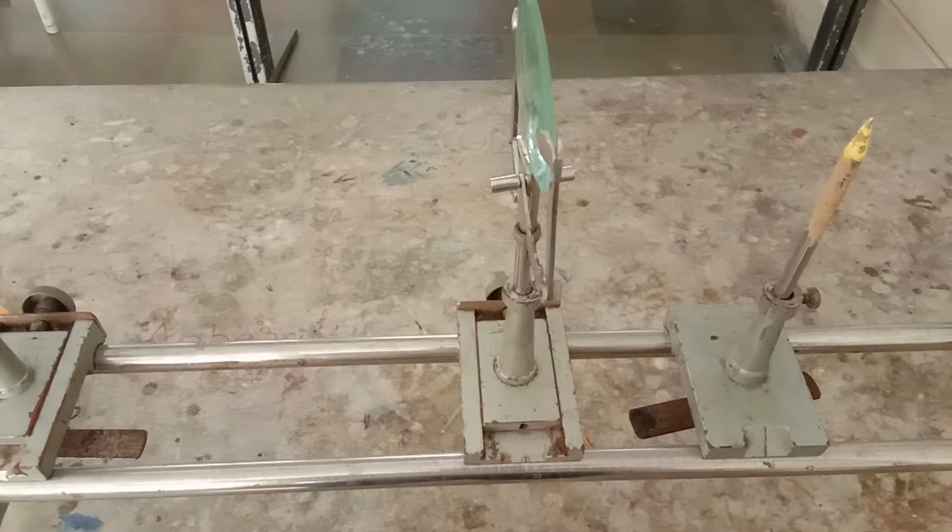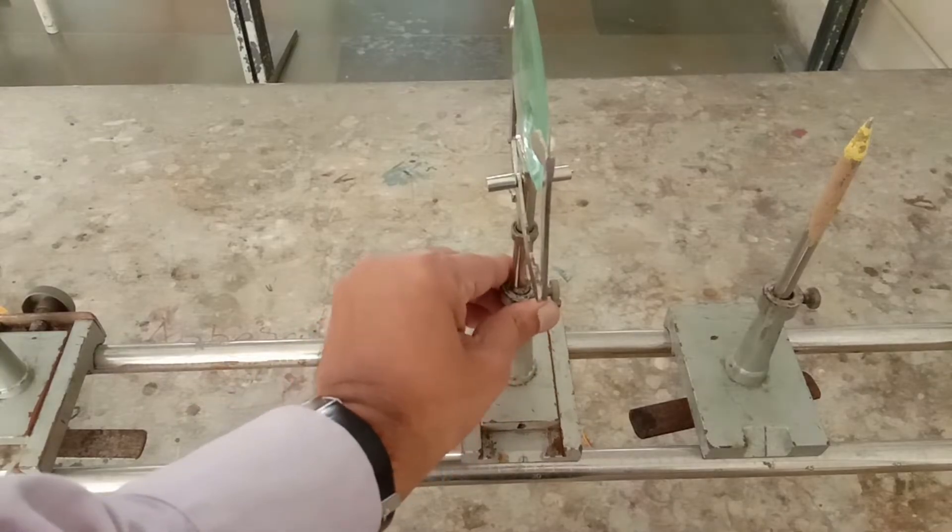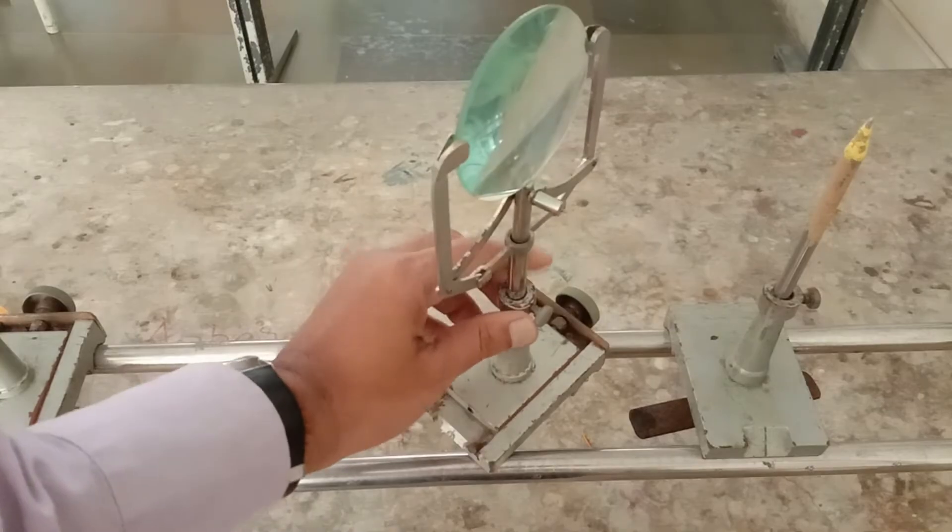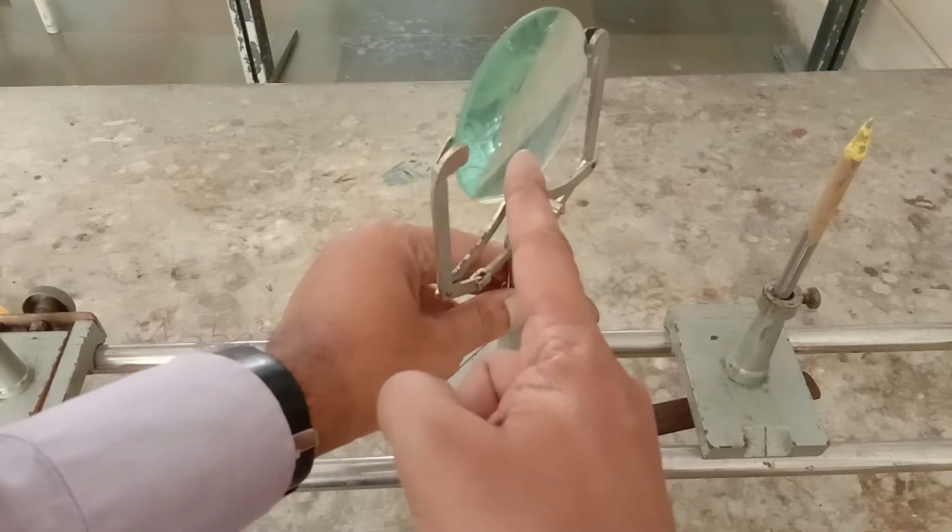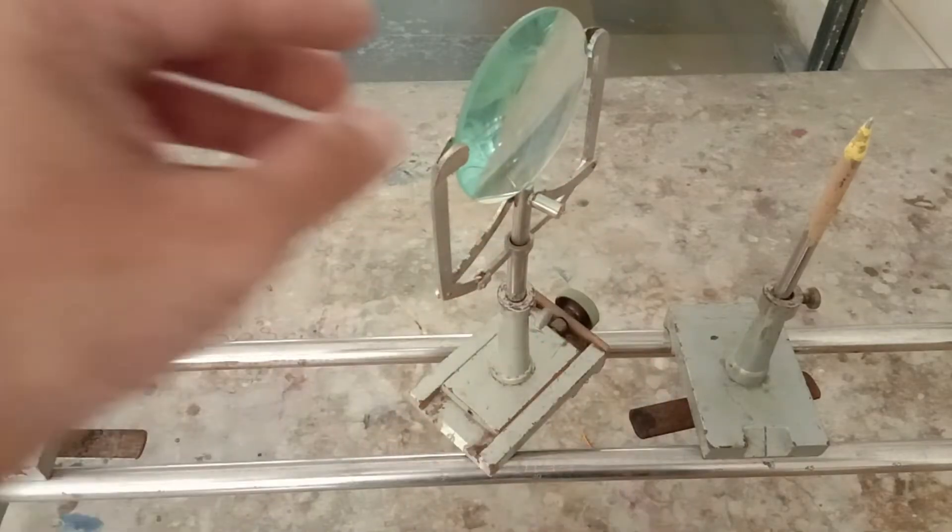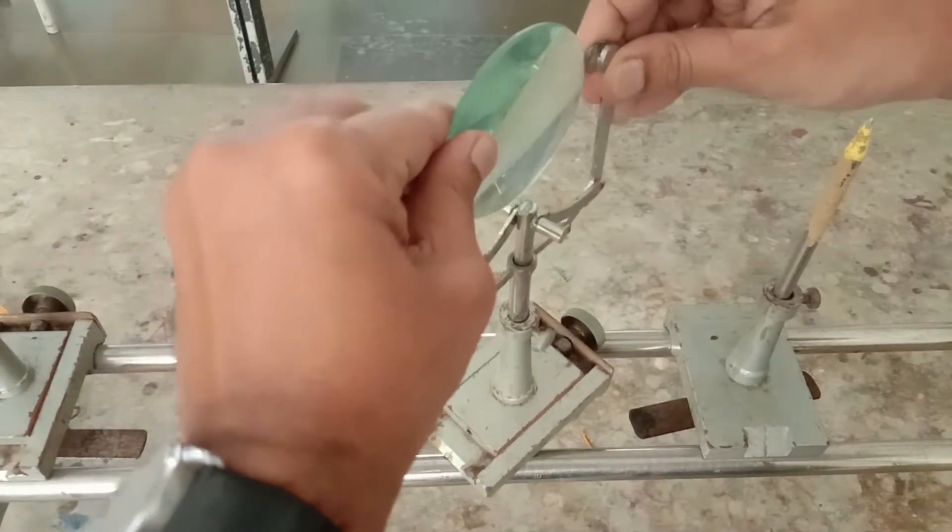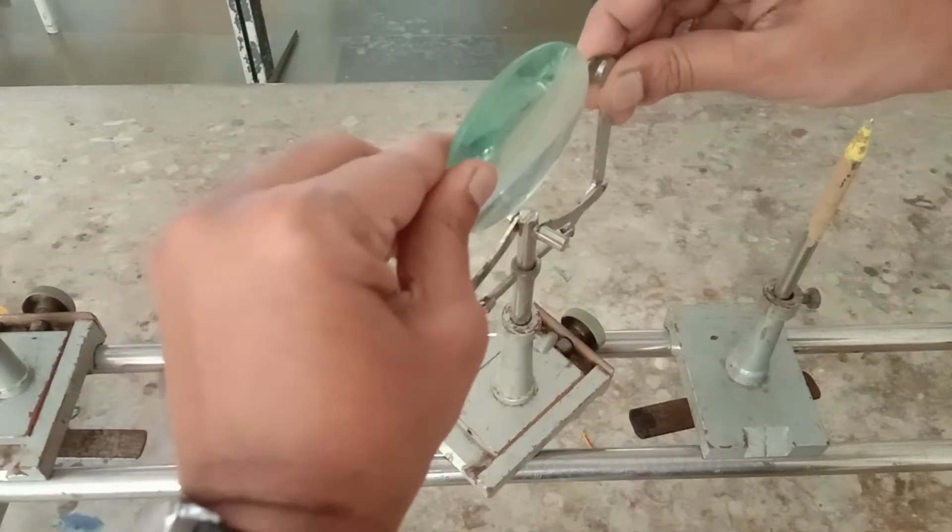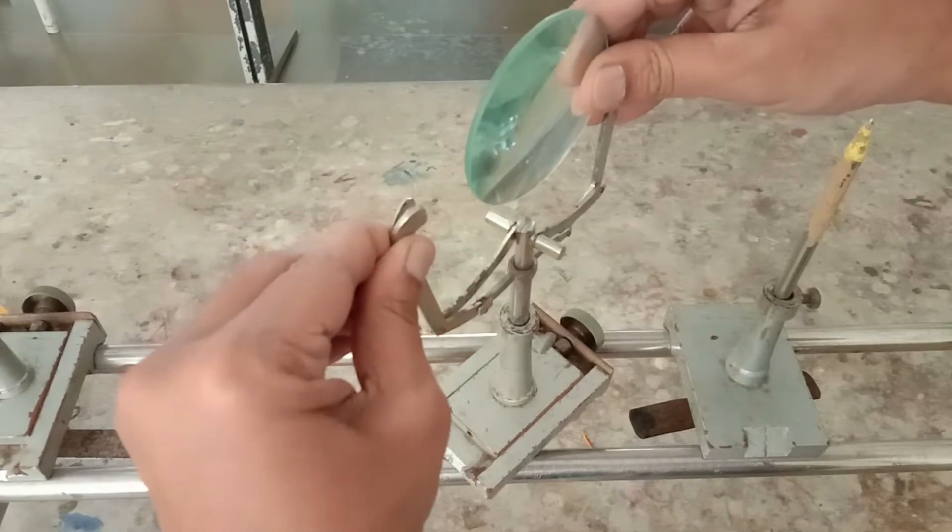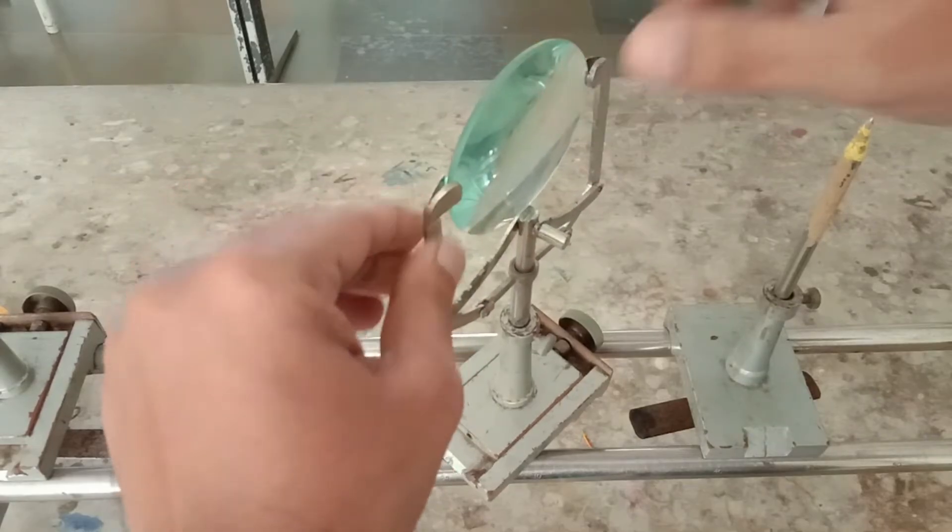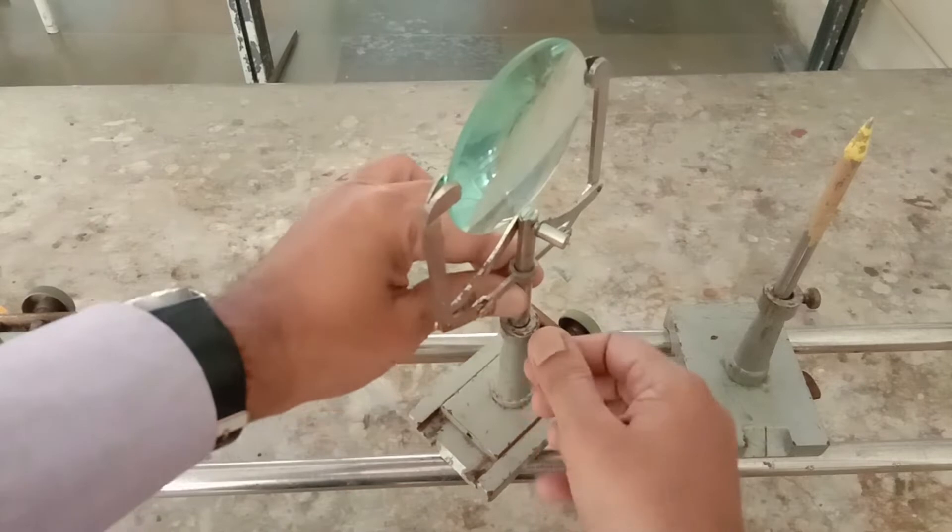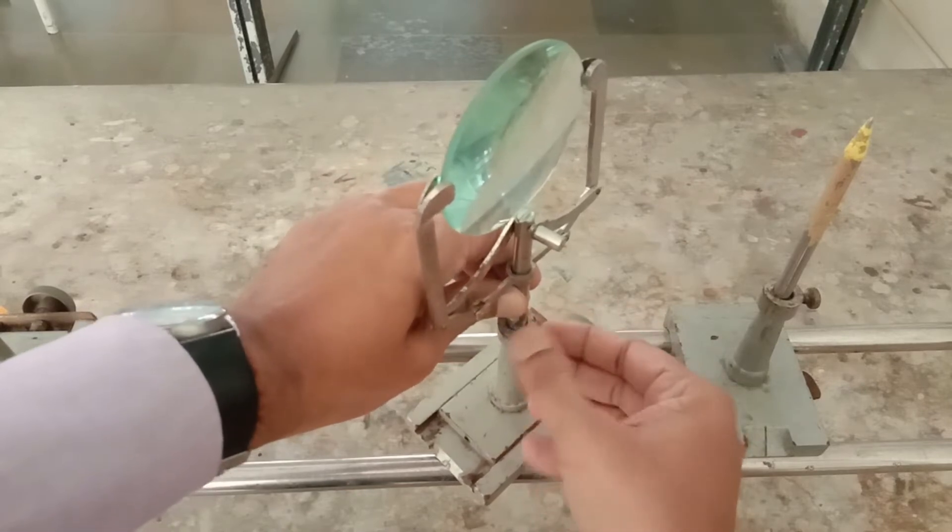This is a convex lens placed on the lens holder. Its arms are movable so that smaller and bigger size lenses can be placed. You can also adjust the height of the lens with the help of the screw.